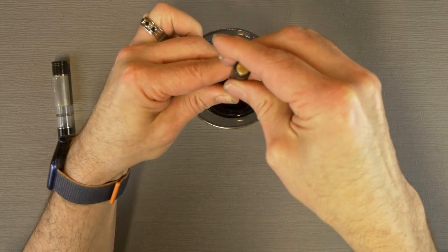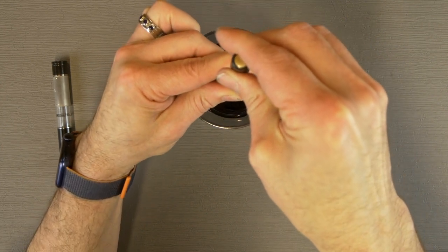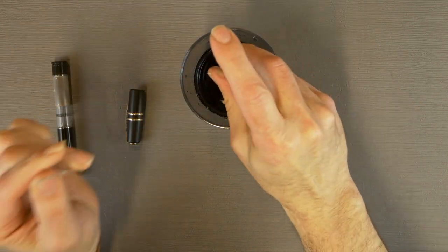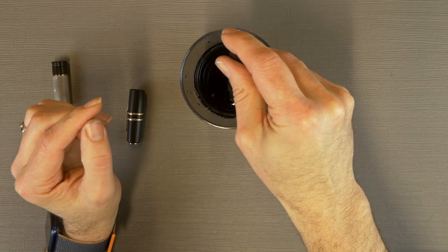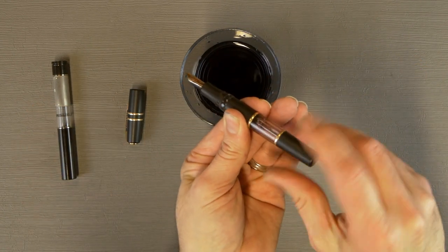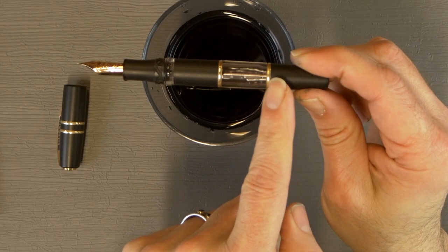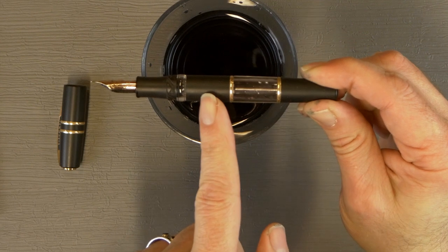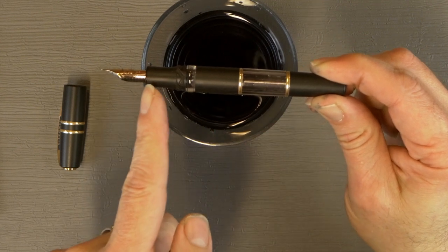Now I want to show you a little bit about the double reservoir. So I'm going to fill it halfway here. And if I tighten it down, tightening down the knob here cuts off flow of ink from the main barrel to the front reservoir.